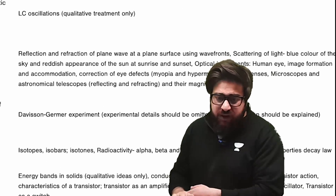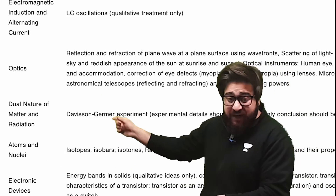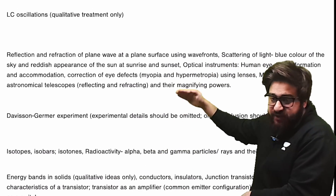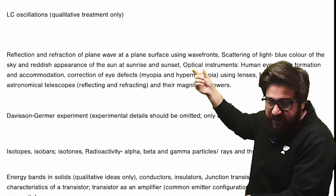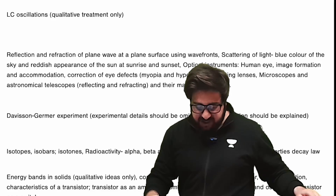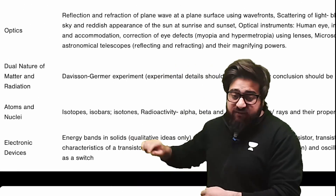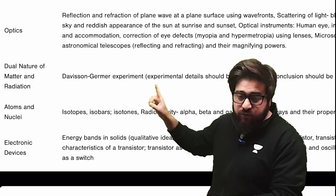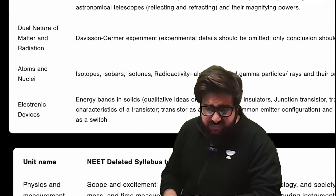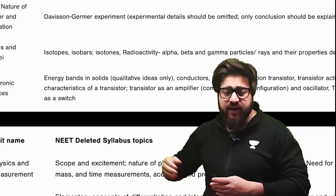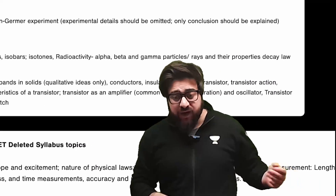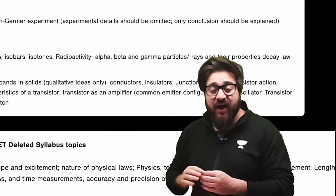Most importantly, from the chapter on optics, you can clearly see all the topics which have been deleted — you can take a screenshot and see all of those deleted topics. Then in dual nature of matter and radiations, you have the Davisson-Germer experiment, which has been deleted. And most importantly, in atoms and nuclei, you have isotopes, isobars, isotones, radioactivity — alpha, beta, gamma — all of this has actually been deleted.